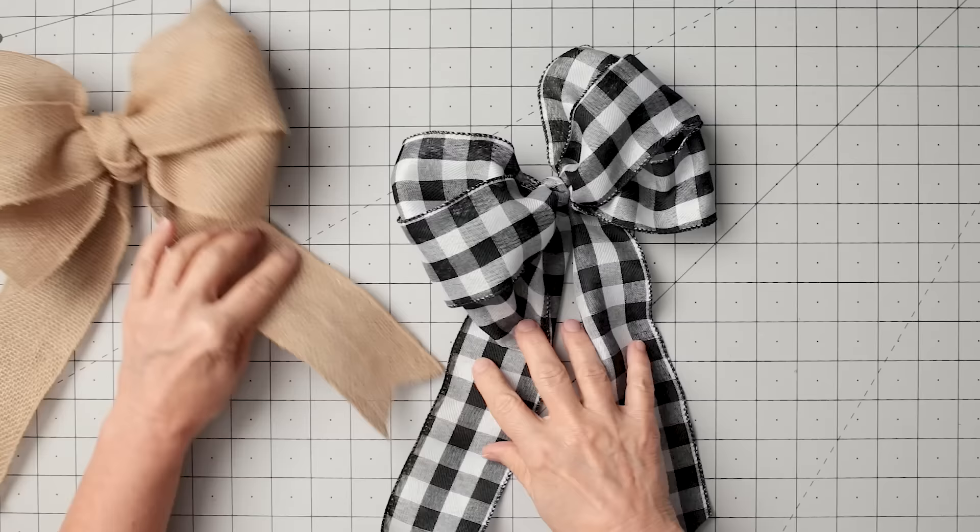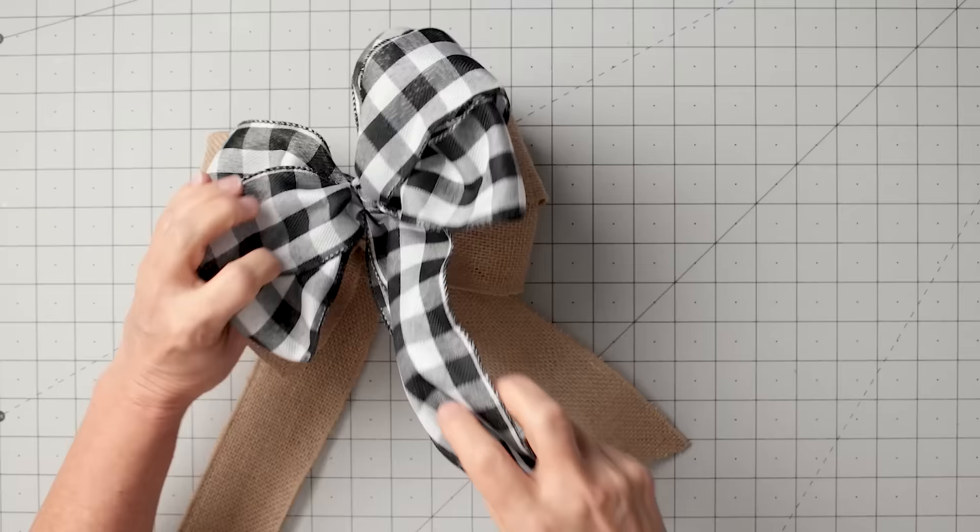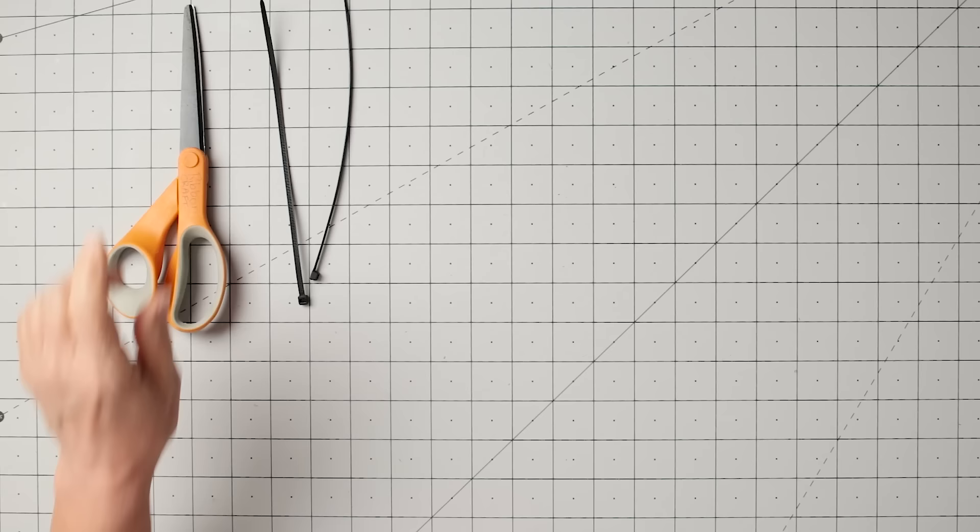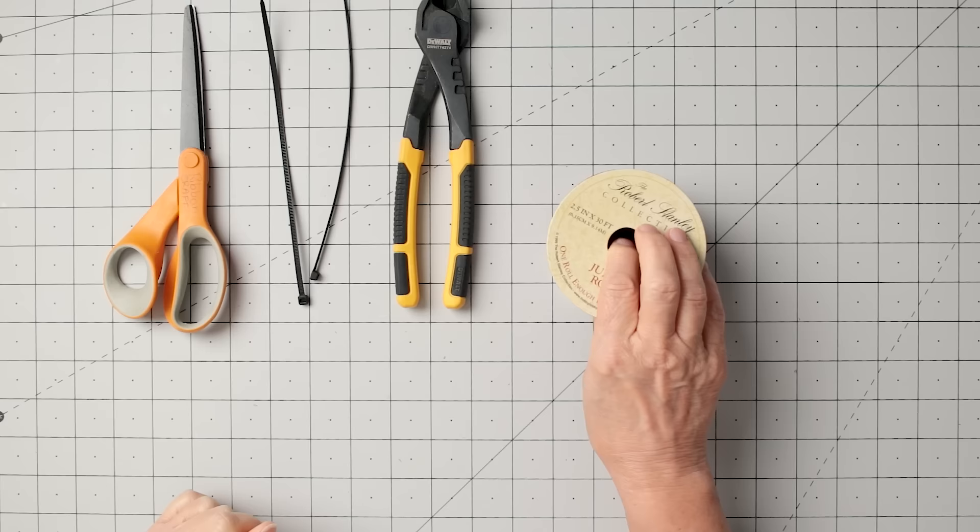The buffalo check is a very thin ribbon and it makes a little different bow. Sometimes it's kind of cute to put them together. All right, let's get started. We're going to use some zip ties to hold our little bow together.